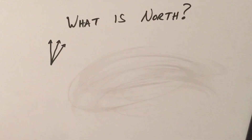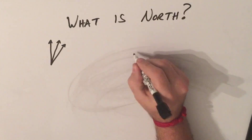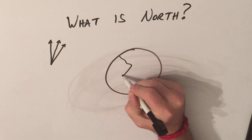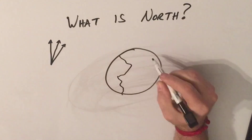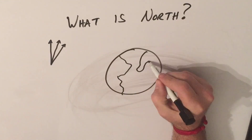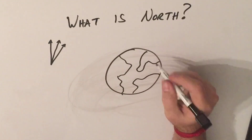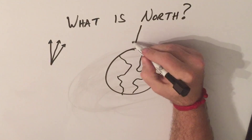True North is the North Pole itself. The easiest way to understand this is by looking at a globe and seeing exactly where it connects at the top. This is the axis that the Earth rotates on.